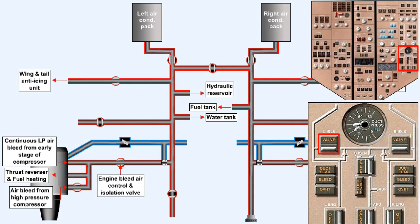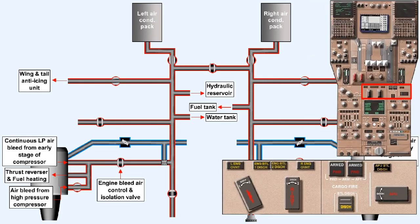All of the bleed air supply from the engine can be shut off if required by the operation of an isolation valve. The isolation valve is operable from the bleed air control panel on the flight deck. The isolation valve will also be closed when the engine fire handle is operated to isolate that engine bleed air from the rest of the aircraft.